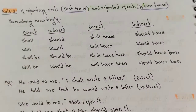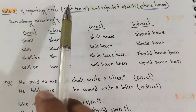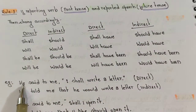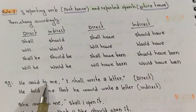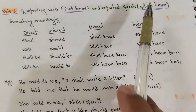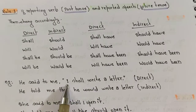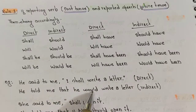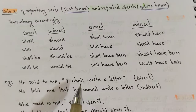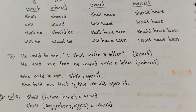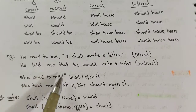Example: 'He said to me, I shall write a letter' — the reporting verb is past tense and the reported speech is future tense. It becomes: 'He told me that he would write a letter.' Here 'shall' was with 'I', and it converts to 'would' because in indirect speech we use 'will' and 'would' with 'he', 'she', 'it', 'they'.